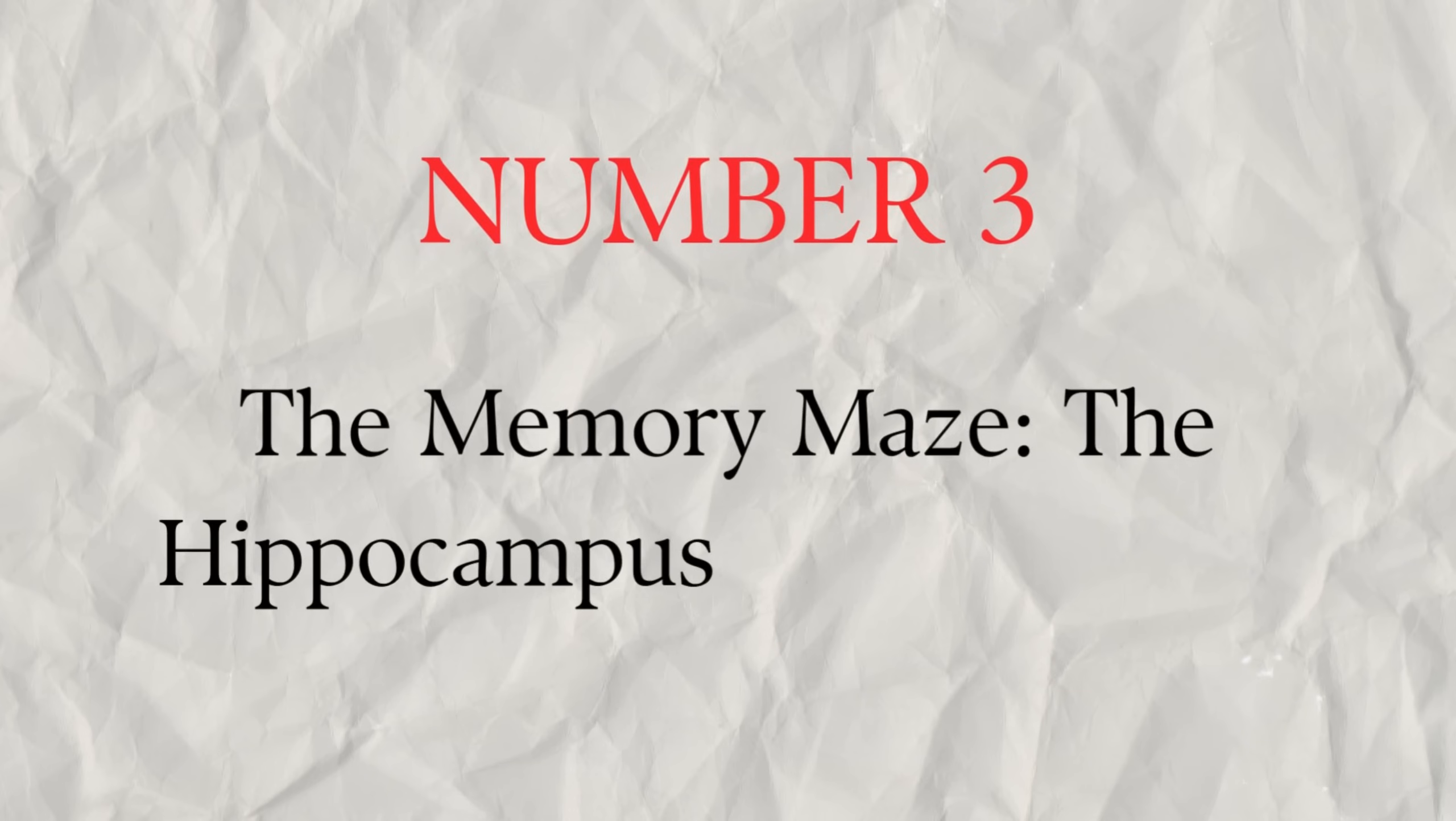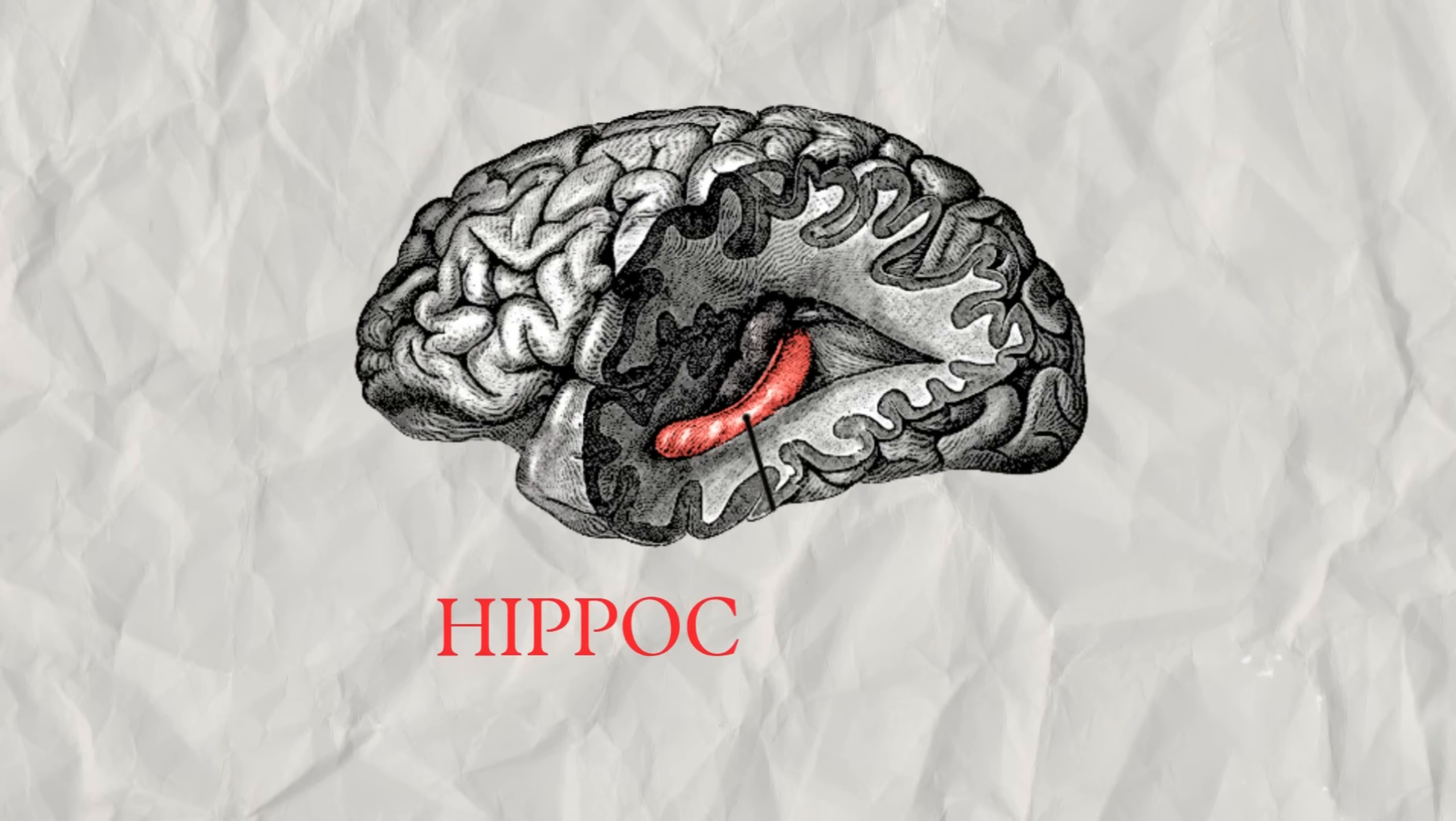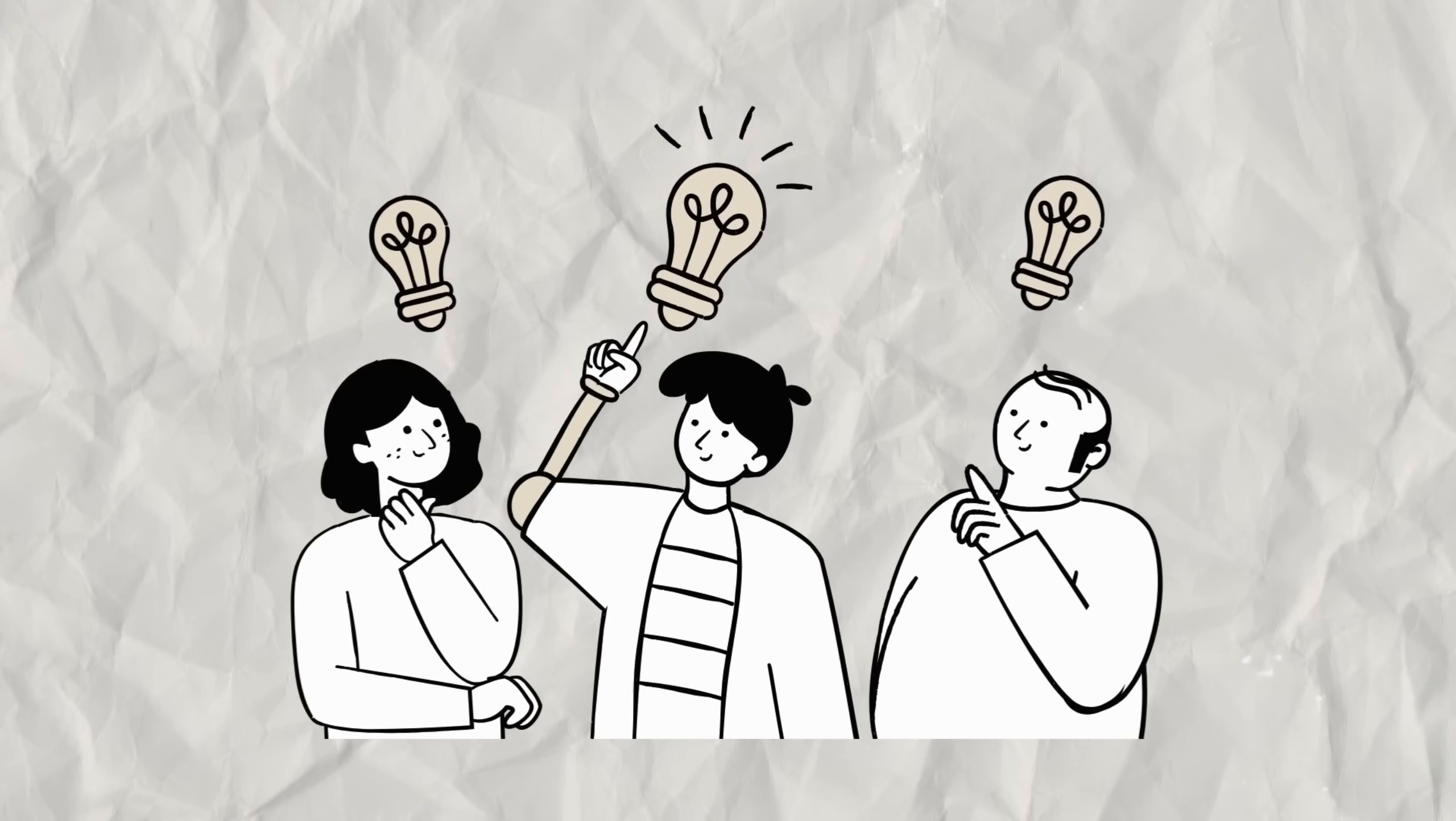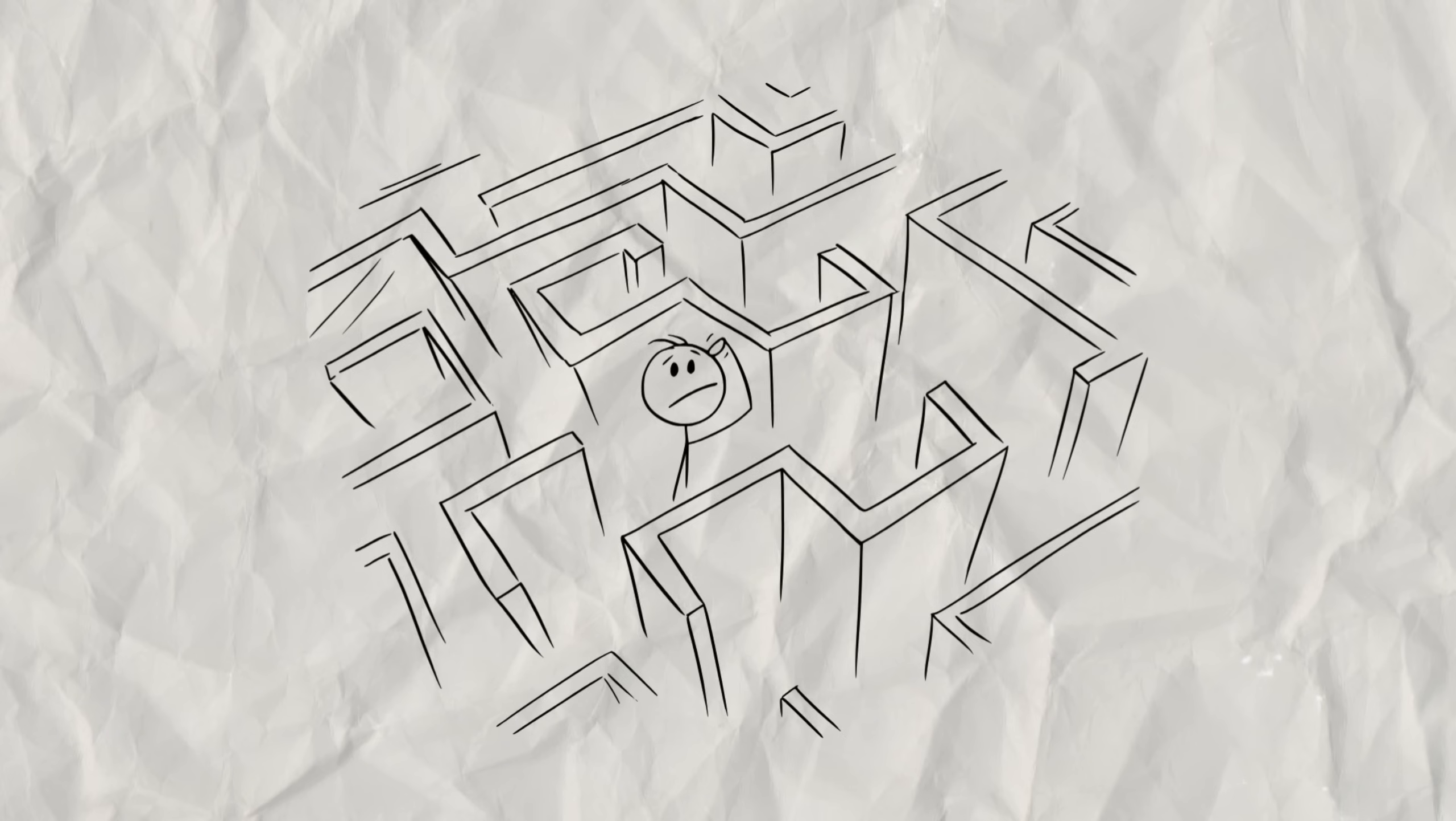Number three, the memory maze. The hippocampus and distorted recollections. The hippocampus is your brain's memory center, particularly for contextual and chronological memories. Trauma can disrupt its function, leading to fragmented or jumbled recollections of traumatic events.